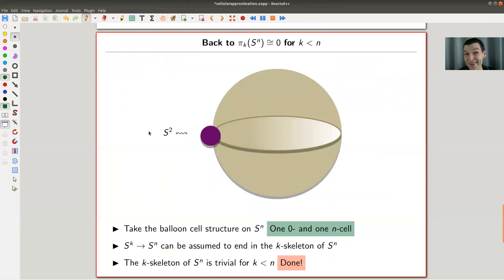And right, and now we are done, right? So we were trying to answer this problem of computing the π_k's of the S^n's for k small enough. And what you do is you just choose for S^n the cell structure of the zero skeleton and the n-skeleton.